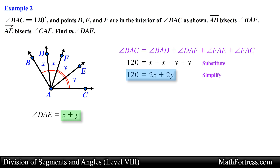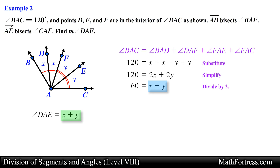Notice that if we take the geometric relation representing the sum of the angles and divide it by 2, we obtain the value of x plus y — and jackpot, we now know the value of x plus y. In this case it is equal to 60 degrees, and this is our final answer. This wraps up the Division of Segments and Angles video series. In our next video series we will go over the basics of coordinate geometry.